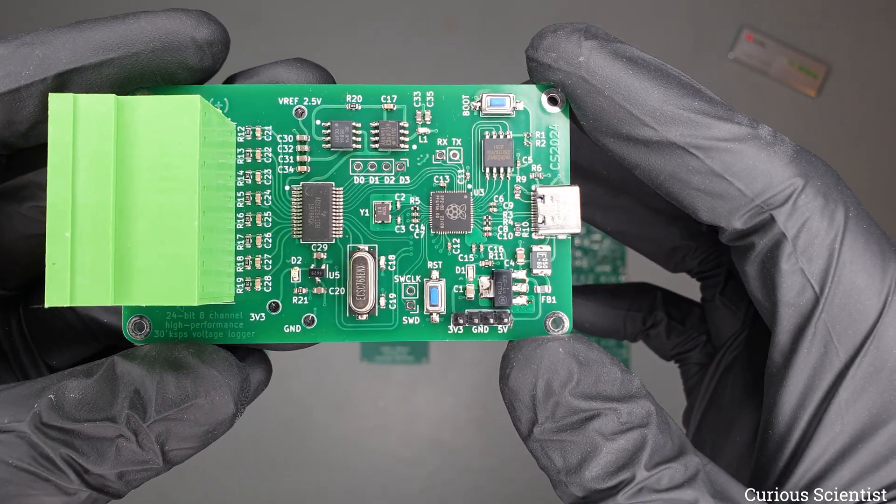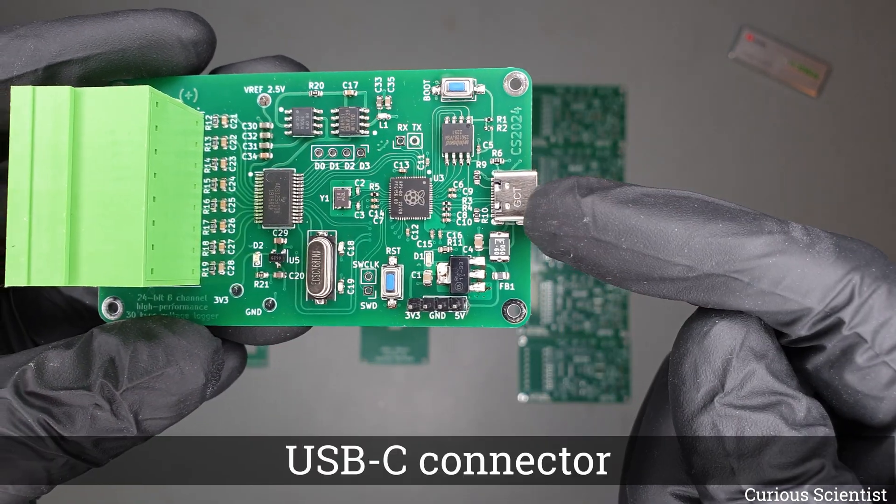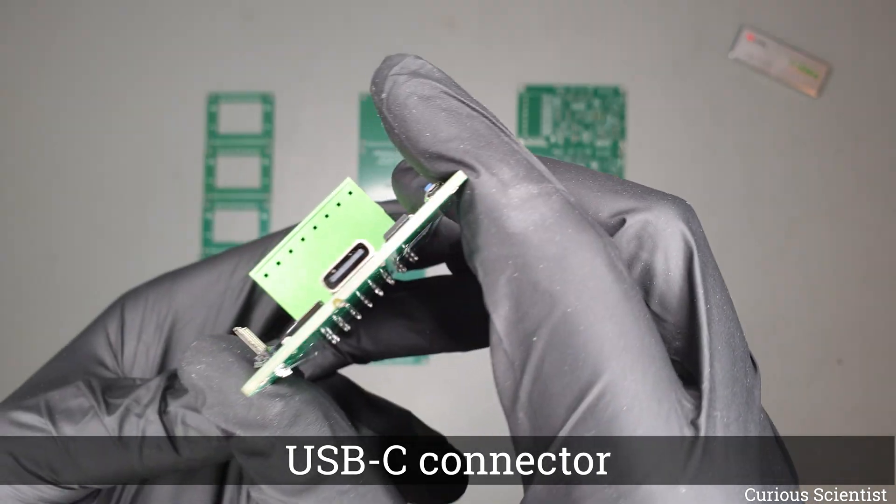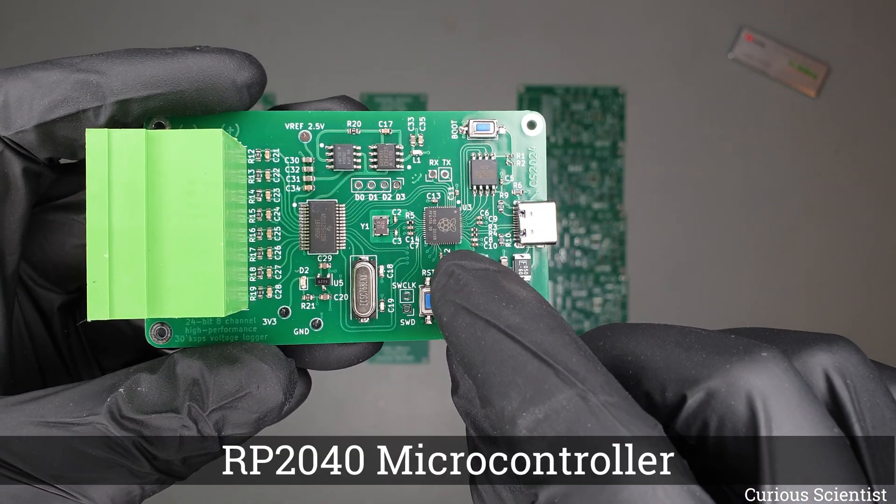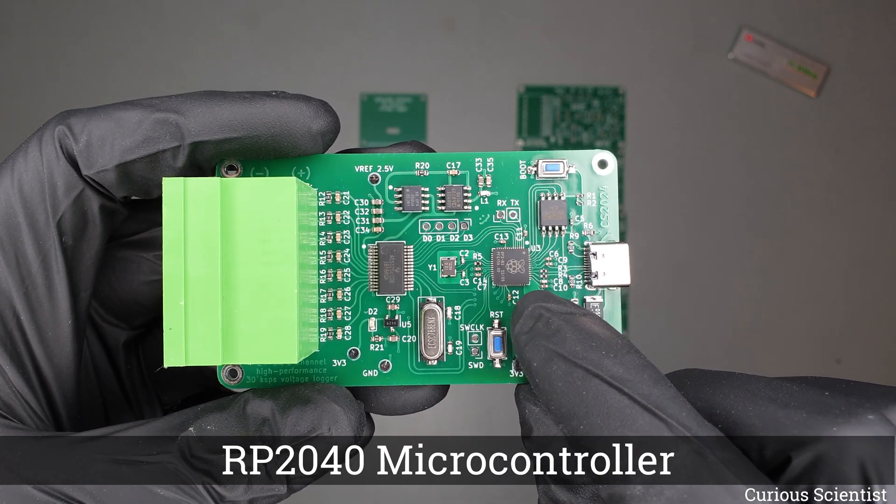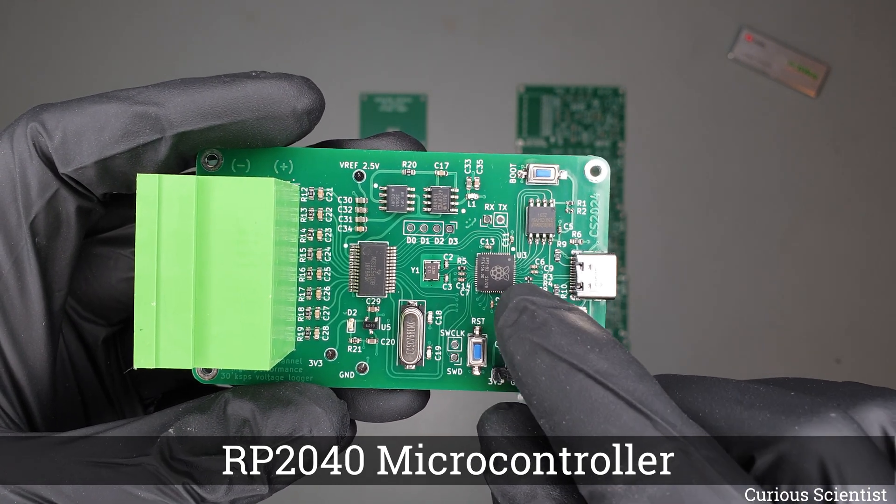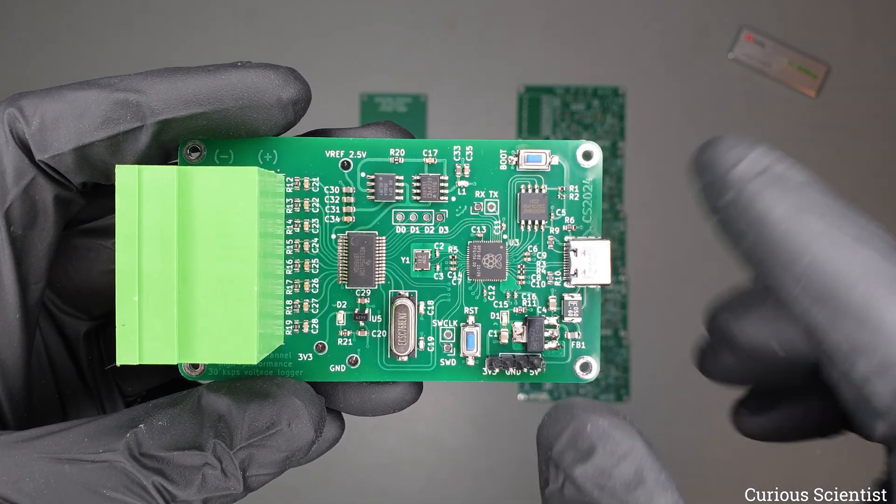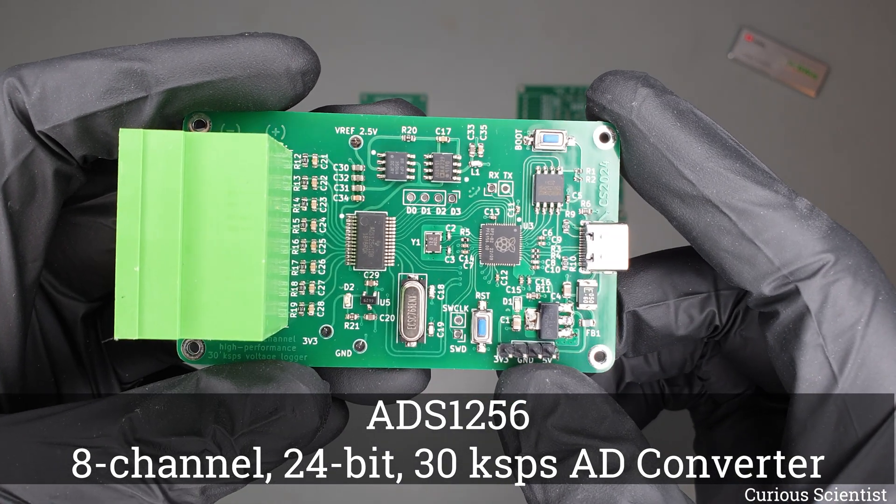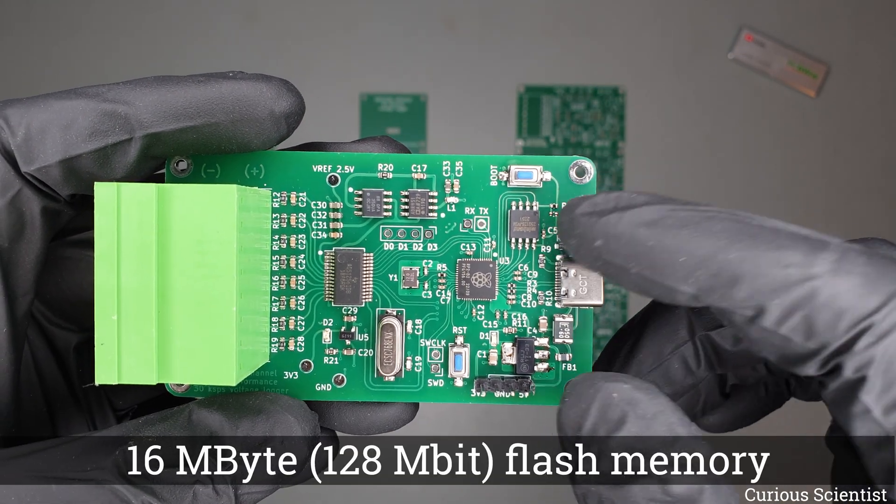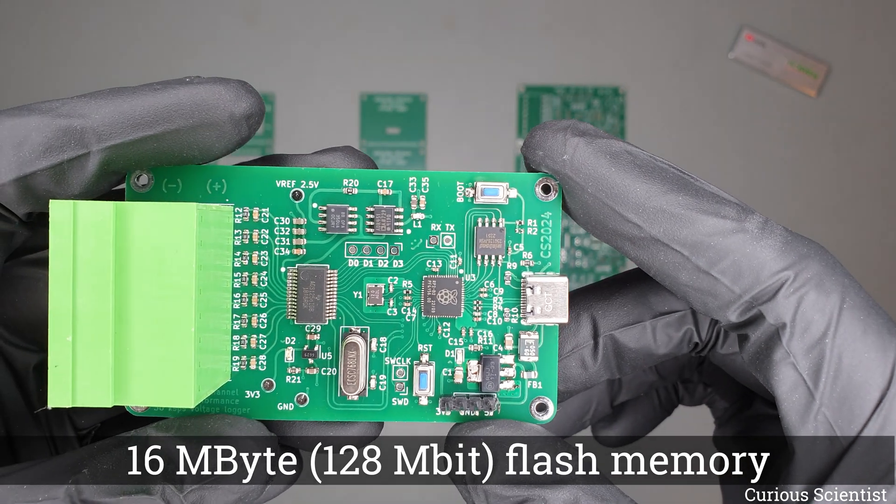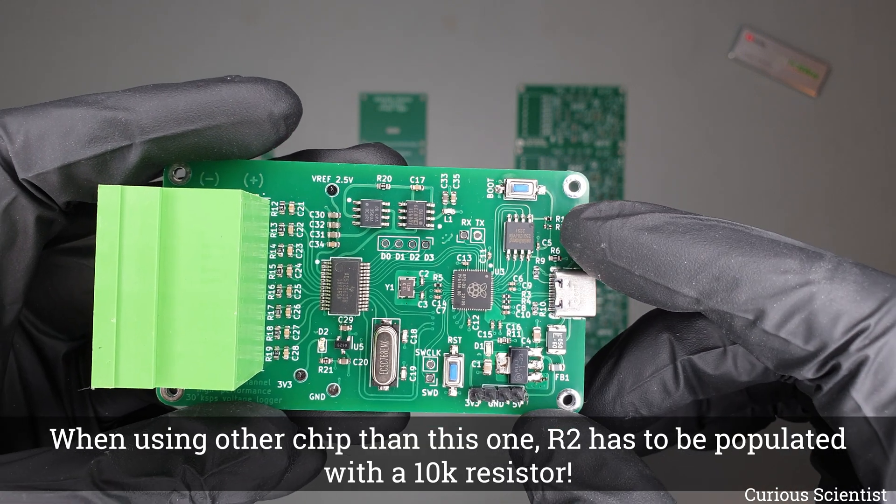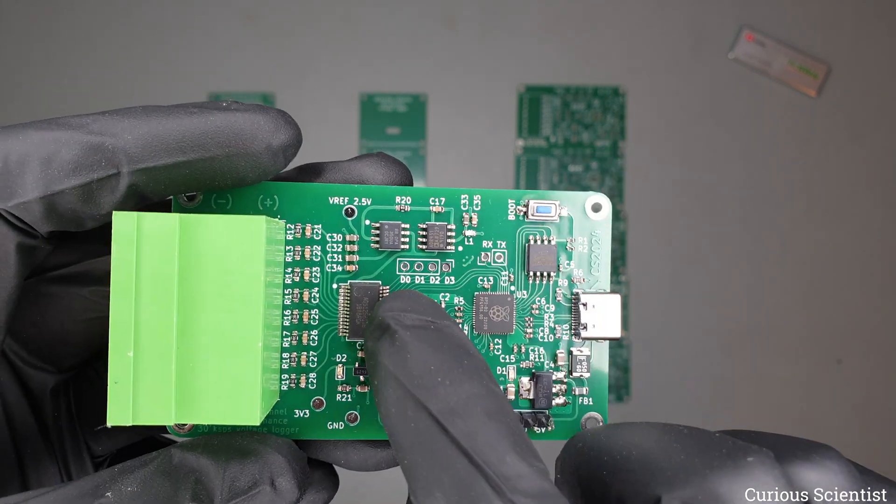Starting from this side we have a USB-C connector. I try to use the most modern or up-to-date connectors. Then the microcontroller is an RP2040 microcontroller, it's a high performance microcontroller so it can drive the ADS1256 just fine. We have an onboard flash memory, I use the largest one which is 16 megabytes, but you can go down to 2 megabytes and you are safe with everything.